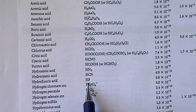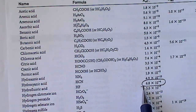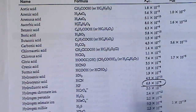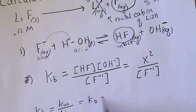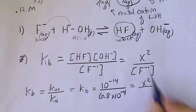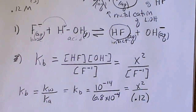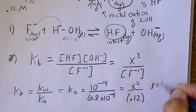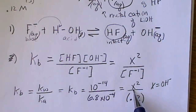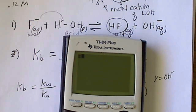Looking up hydrofluoric acid on the appendix, the acid dissociation constant Ka is 6.8×10⁻⁴. We calculate KB by taking 1×10⁻¹⁴ divided by 6.8×10⁻⁴. We then set that equal to x² over 0.12. Solving for x gives us the hydroxide ion concentration. Note that x represents hydroxide, so if we take the negative log of x we get pOH, and we must subtract that from 14 to find pH.